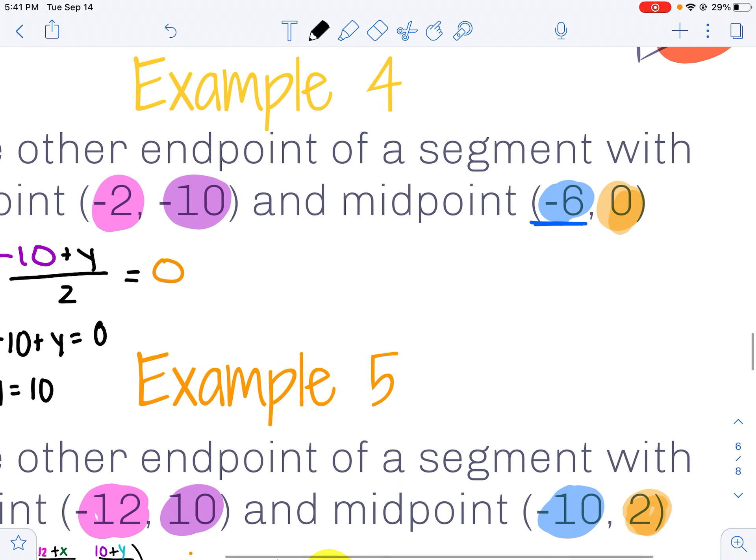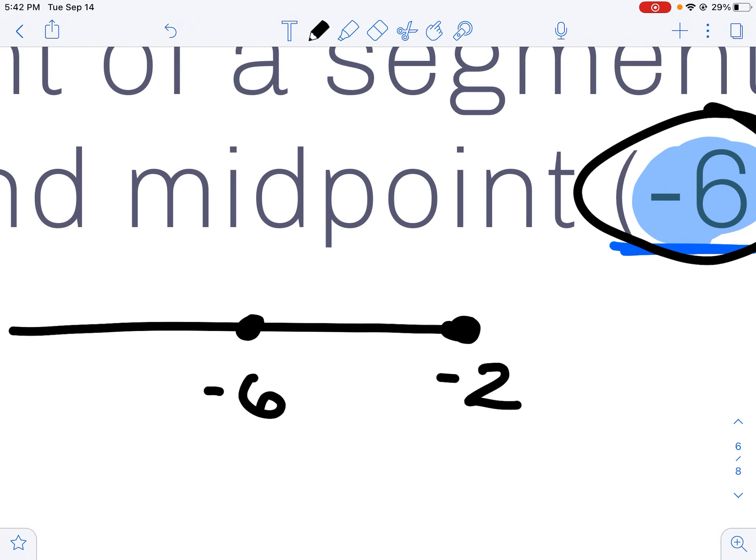The other way I can think of this is on a number line. So if I think about my x values, if negative 2 is one endpoint, and negative 6 is my midpoint,